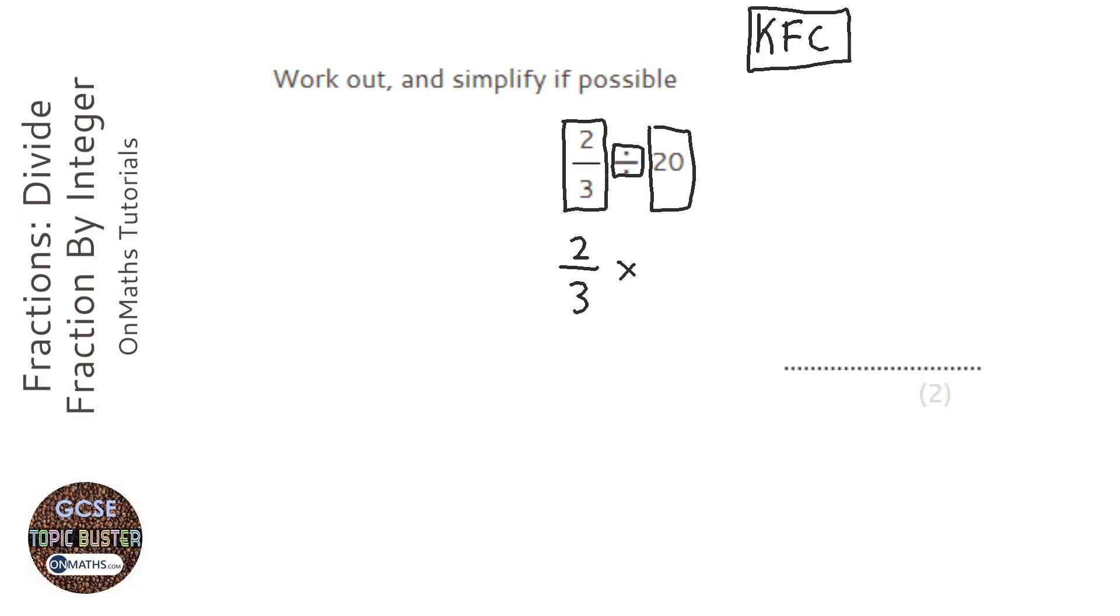Now, we can't really flip that. We can. What is 20 as a fraction? 20 is 20 over 1. 20 over 1 is 20. So when we flip it, it just becomes 1 over 20.